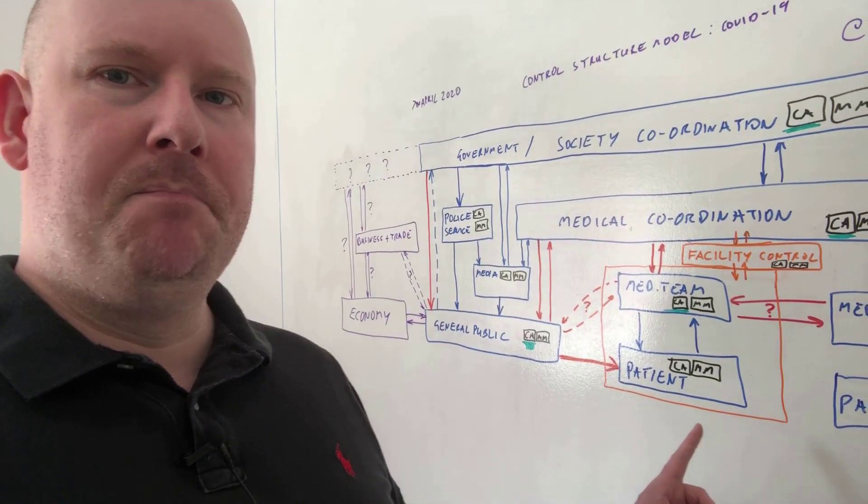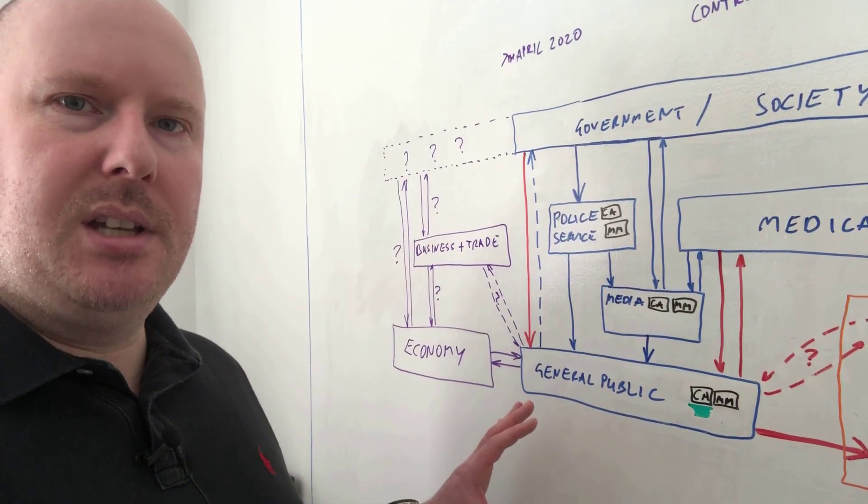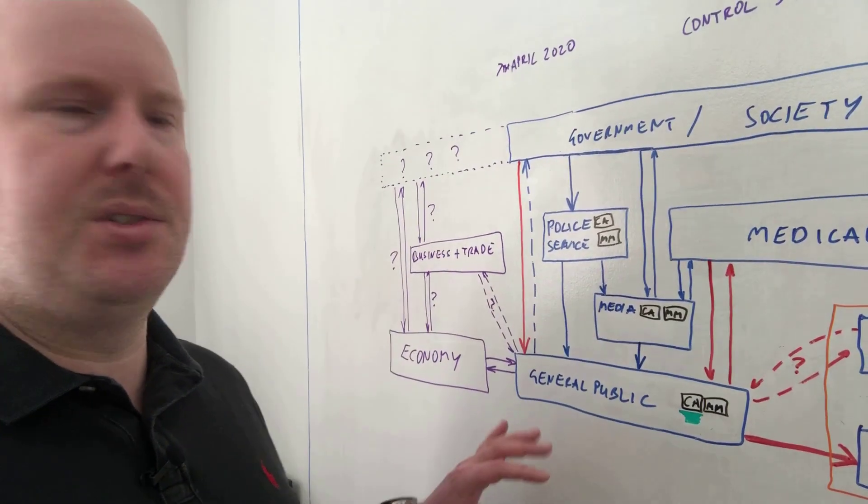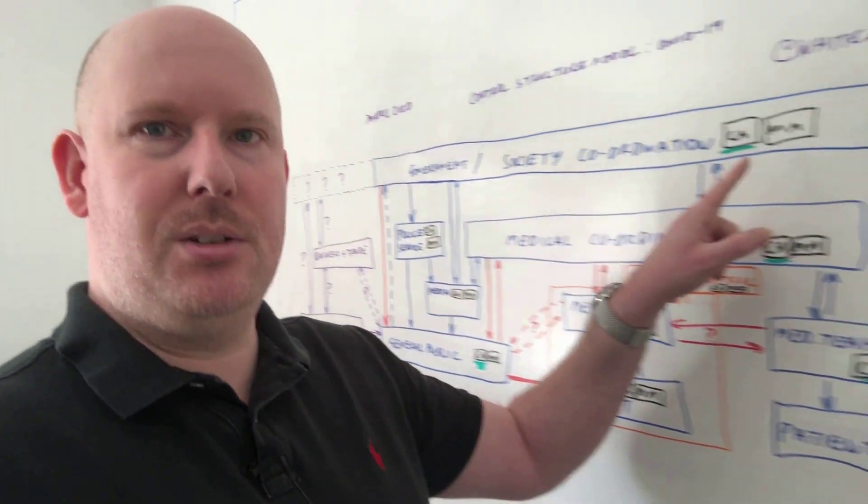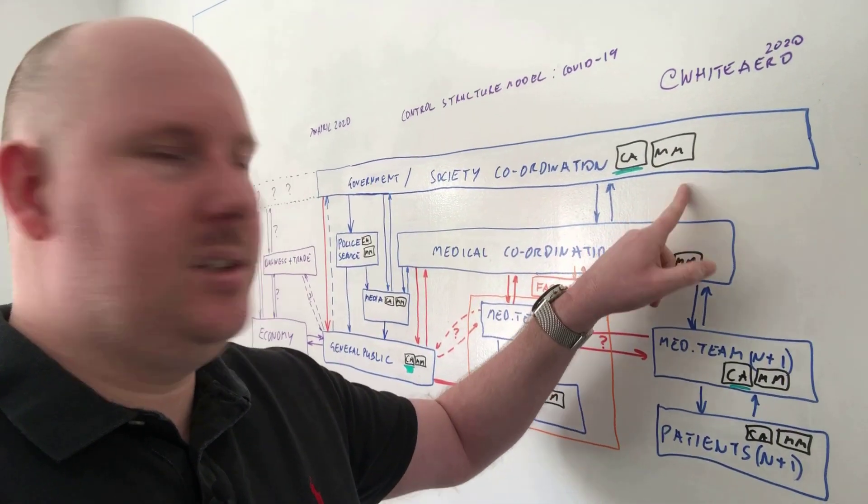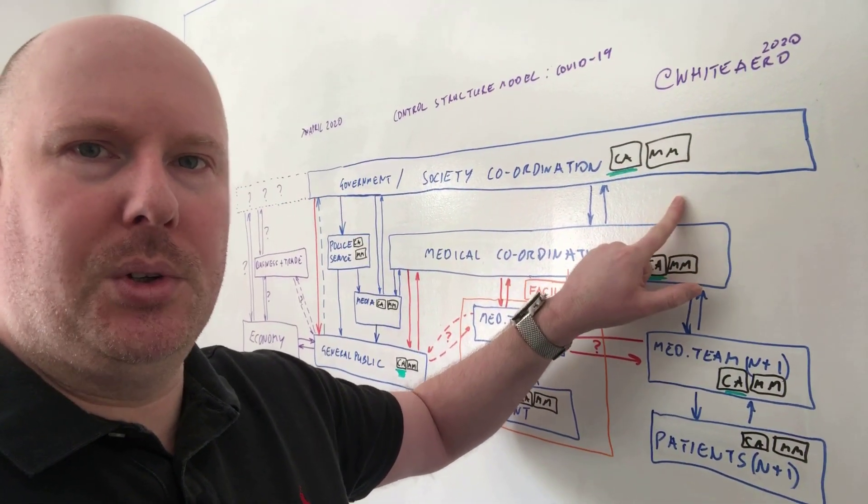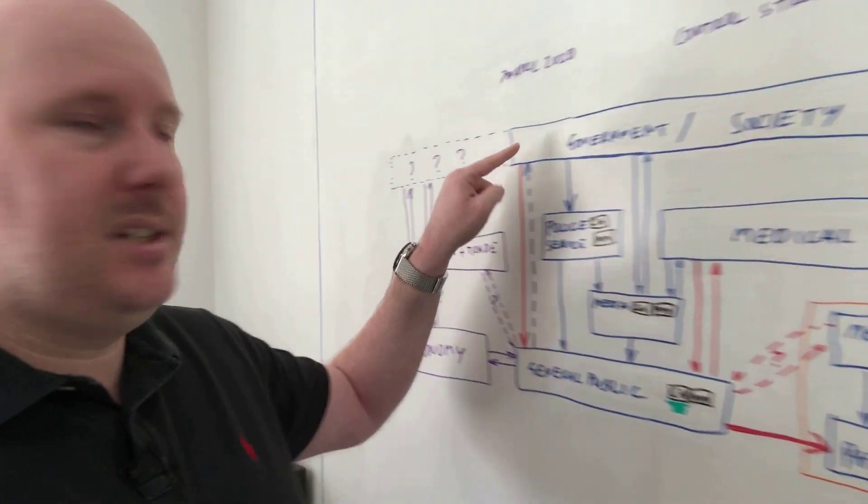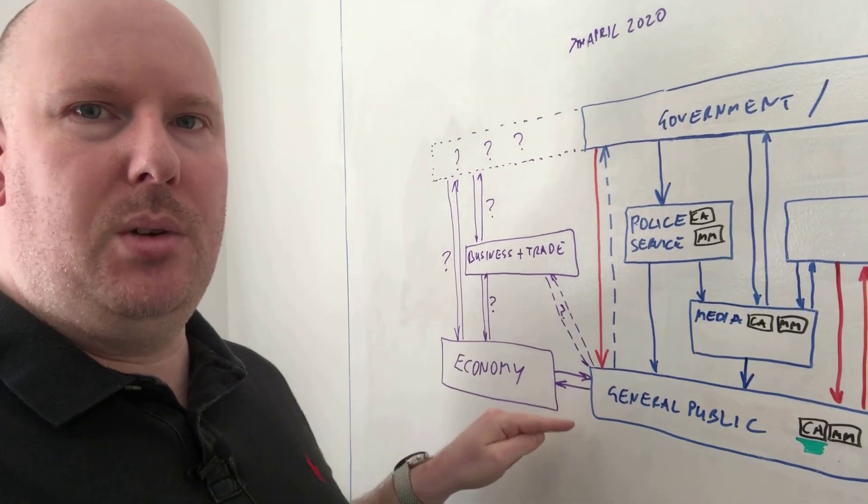So my question is, what are those decisions that need to be made? Who needs to make those decisions in terms of the algorithm? What information do they need? What's their mental model? And then what is the timing of these control actions?